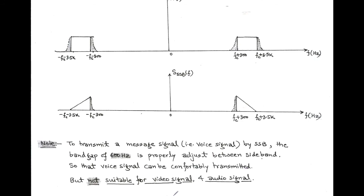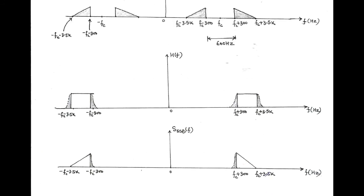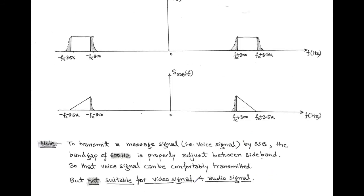This is not suitable for video signals and audio signals. For the transmission of video signals and audio signals, we use another method called vestigial sideband or VSB.